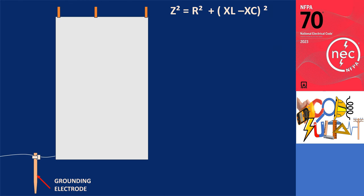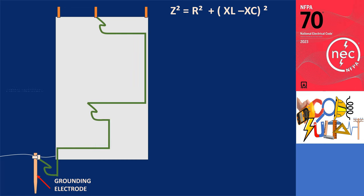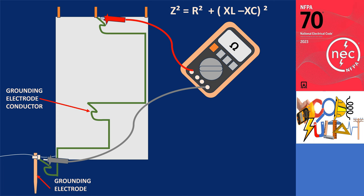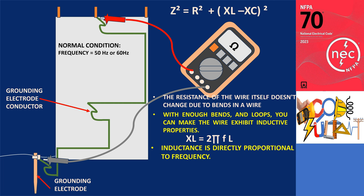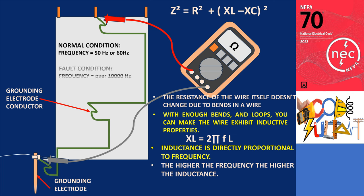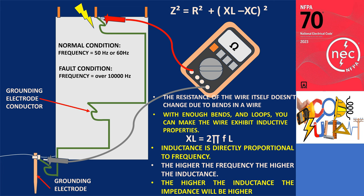Imagine a properly sized earth grounding wire that contains numerous loops and sharp bends. While the resistance remains constant regardless of bends, introducing multiple bends and loops can give the wire inductive properties — and inductance is directly proportional to frequency. While this grounding electrode conductor may be suitable for DC or low-frequency applications such as 50 or 60 Hz, during events like line surges, lightning strikes, or other transients with frequencies over 100,000 Hz, the impedance of the path will significantly increase.